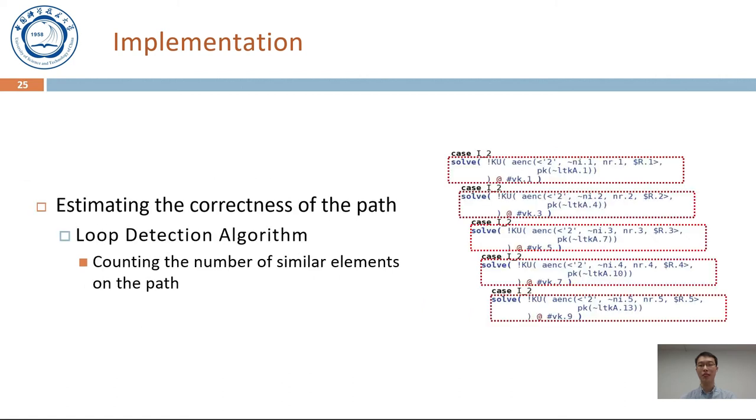For the correctness determination process, the main idea is to detect whether there are loops along the path, since we find the loops may lead to non-termination in verification. Based on the observation, we designed the loop detection algorithm to count the numbers of similar elements on the path.